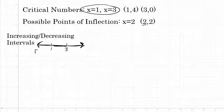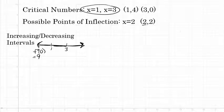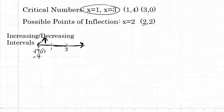I'll pick a value in each interval and substitute it into the first derivative. A number between negative infinity and 1, like 0, substituted into the first derivative yields 9 — positive 9. Because it's positive, that means the graph is increasing over that entire interval. The function is increasing between negative infinity and 1.